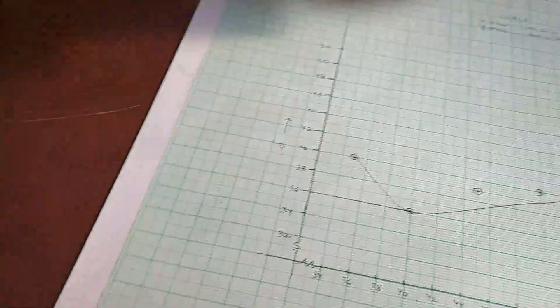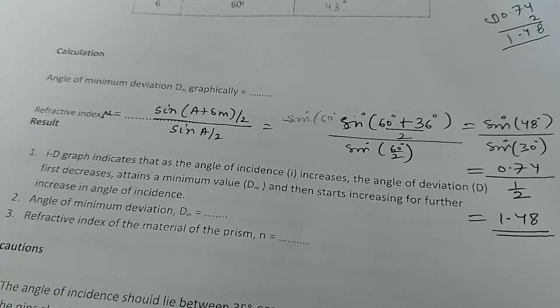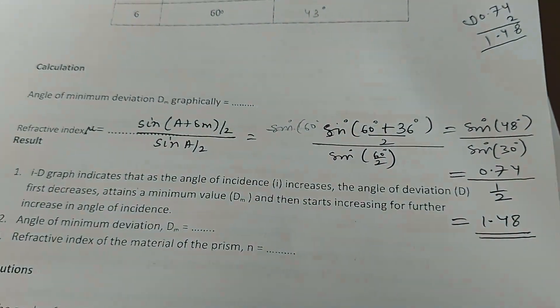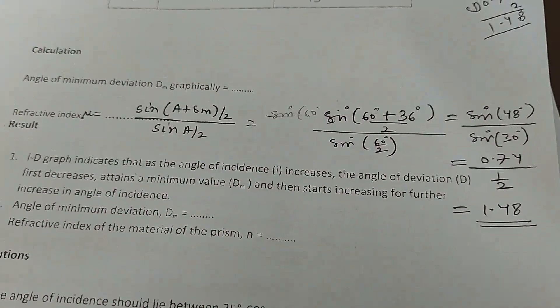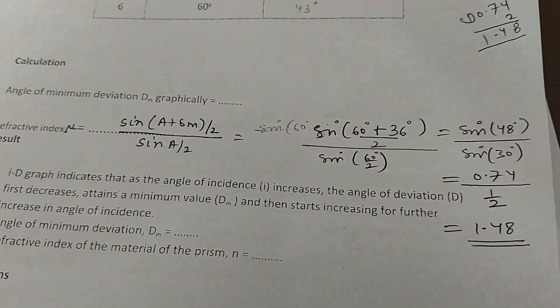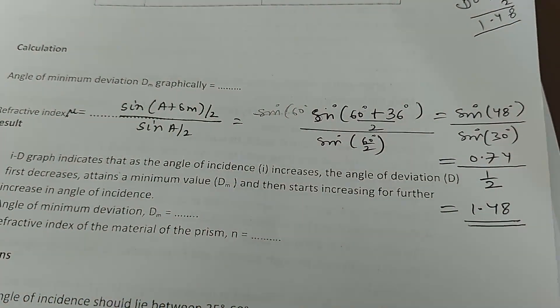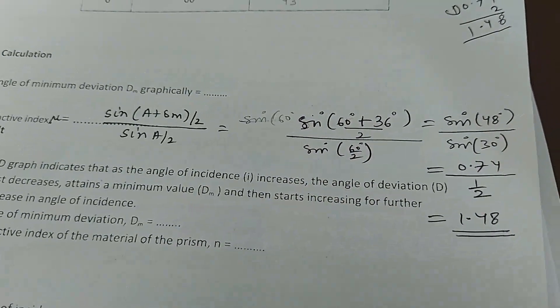In the calculations, the angle of prism we know is 60 degrees. 36 degrees is the angle of deviation. So apply the formula: (A + δₘ)/2 divided by sin(A/2). With that, what you are getting is sin(96/2) in the numerator and sin(60/2) in the denominator.